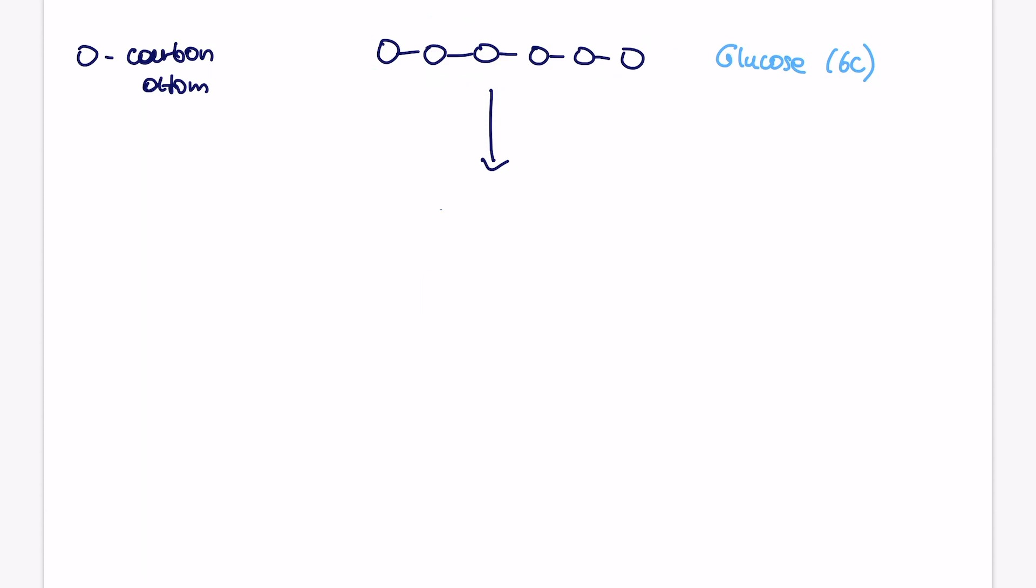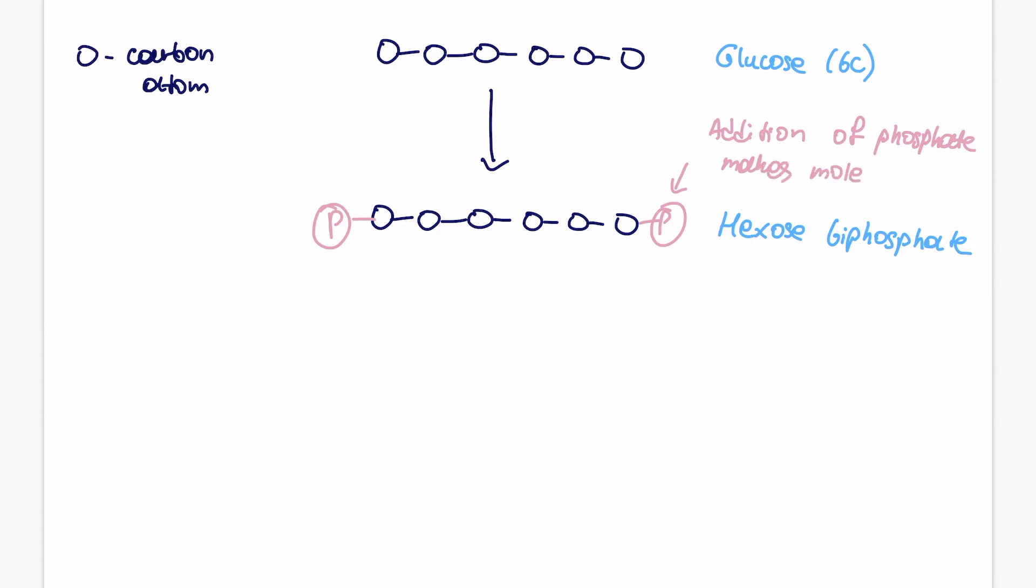So we start with a molecule of glucose, which is a six carbon molecule, and basically what will happen to this glucose molecule is it will gain two phosphate groups. I've represented them here in the pink color, and the molecule will be called hexosebiphosphate. If you do AQA, guys, you do not need to know the hexosebiphosphate, but the rest of the exam boards, you do need to learn that name. And what you need to know, guys, is that the addition of those two phosphate groups make glucose more reactive, and it makes it more unstable. And the two phosphate groups come from two ATP molecules that have been donated.